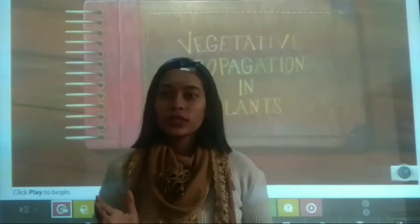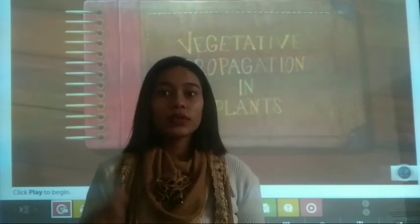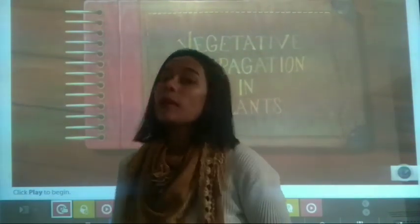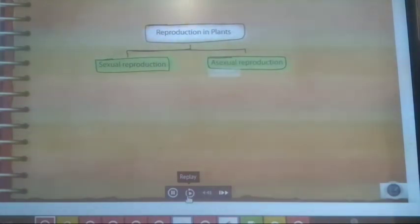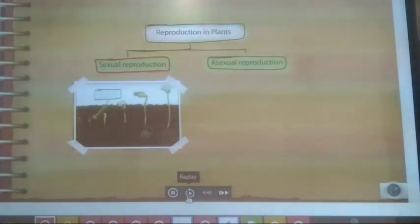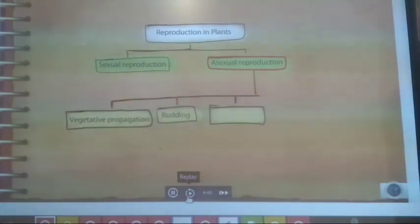So students, so far we discussed about three types of asexual reproduction: budding, fragmentation and spore formation. Now we will discuss about the last one, that is vegetative propagation in plants. Plants do not always reproduce by seeds. They may be produced both sexually and asexually. In sexual reproduction, new plants grow from seeds. And in asexual reproduction, young plants do not grow from seeds. Instead, they use methods such as vegetative propagation, budding, fragmentation and spore formation. In this module, let's look at vegetative propagation.